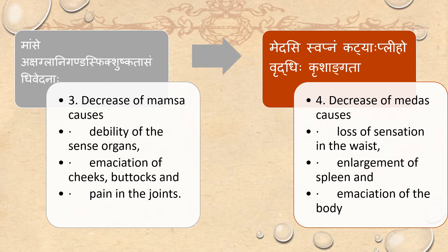Medhasi Swapnam, Katyaha, Pliho Vridhi, Krisha Angada. Decrease of Meda causes loss of sensation in the waist, enlargement of the spleen, and emaciation of the body.